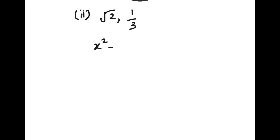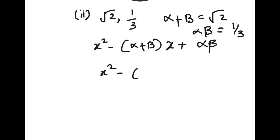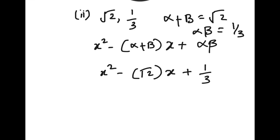The second question: the sum of zeros is √2 and the product of zeros is 1/3. Using the formula x² - (α+β)x + αβ, with α+β = √2 and αβ = 1/3, we get x² - √2·x + 1/3.